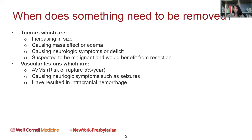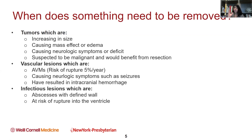We remove things that cause neurologic symptoms such as seizures. Cavernous malformations can typically cause seizures, and if they're not causing seizures or bleeding, they don't necessarily have to be removed. When they've resulted in hemorrhage, we typically want to remove it to prevent recurrent bleeding. We also remove infections when it's an abscess with a thick or defined wall, because antibiotics typically don't penetrate that wall. Most abscesses need to be drained or removed. Abscesses near the ventricle are at risk of rupturing into the ventricular spaces, causing severe ventriculitis or meningitis.